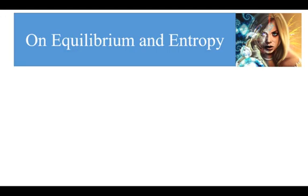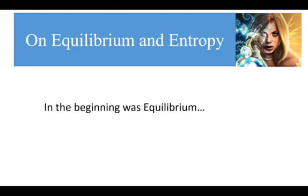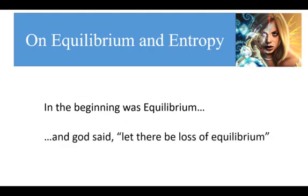The term equilibrium is pretty straightforward. I think everyone knows what this means. In the beginning was equilibrium, and God said, let there be loss of equilibrium. In the beginning was unchanging, and God said, let there be change. When something is in equilibrium, it is said to be in an unchanging state. When something is continuously changing states, it is said to be out of equilibrium.